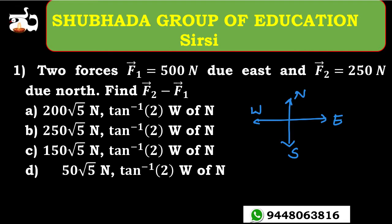Here, F1 vector is due east — let me use a different color to solve this problem. This is the direction of the F1 vector, and 250 N along the north. This is the direction of F2 vector. So now the question is to find out the value of F2 minus F1.